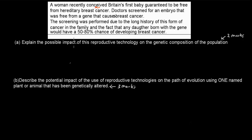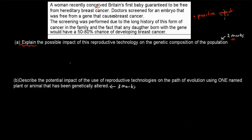Welcome back. The first part says: explain the possible impact of this reproductive technology on the genetic composition of the population — two marks. What you should do is talk about what kind of impact this would be. This would generally be a positive impact, because whilst we do decrease diversity by removing certain genes through screening, the genes we remove are bad genes and we keep all the good genes. So we do remove genes from our gene pool, but these are the bad genes, so there's going to be an overall positive impact.